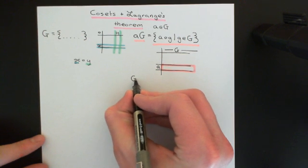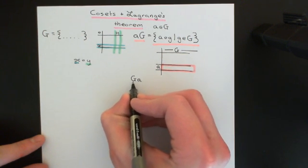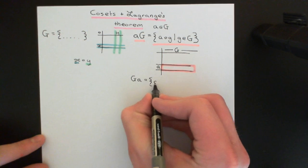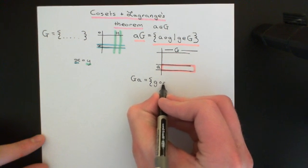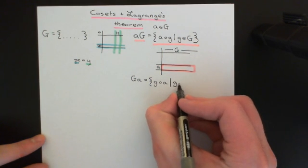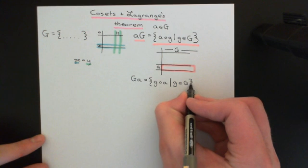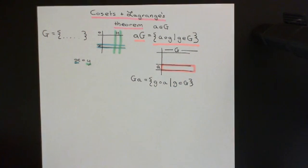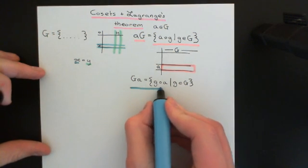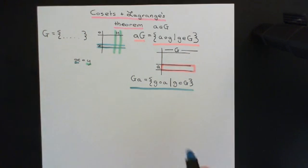Similarly, we can write all of the elements in the column dedicated to little a as capital G followed by little a on the right. This means the set of all things of the form little g composed with a on the right — so little g right-multiplied by little a, where little g is an element of capital G. You let little g vary over all the elements of the group, right-multiply all of them by little a, and collect all the answers into this set capital G, little a.